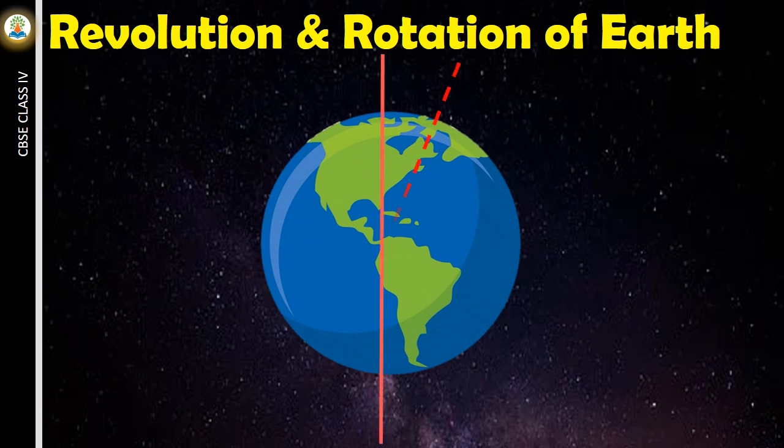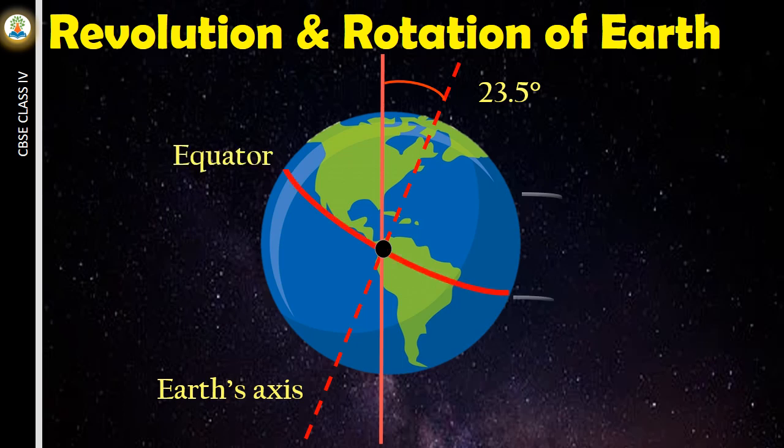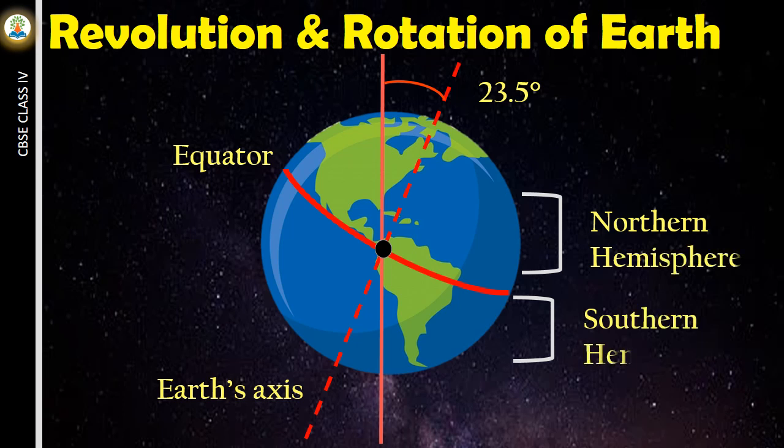The axis of Earth is an imaginary tilted line that passes through the center of Earth. The axis is tilted at an angle of 23.5 degrees. The imaginary line that passes horizontally through Earth is called equator. The equator divides Earth into two halves: the upper half is called the northern hemisphere and the lower half is called the southern hemisphere.